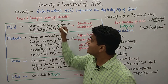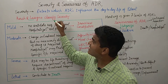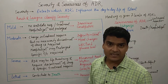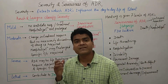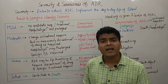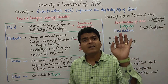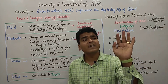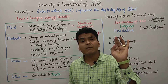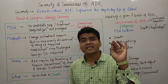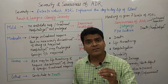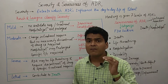Scientists Karch and Lassegna classified severity into four types. These four types are: mild, moderate, severe, and lethal. We will discuss the definition and examples of each of these types.